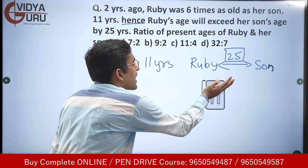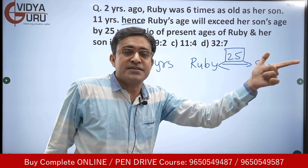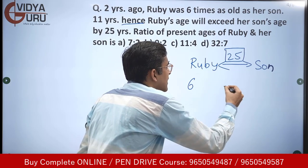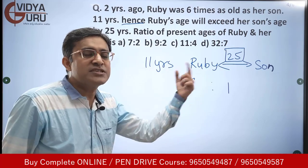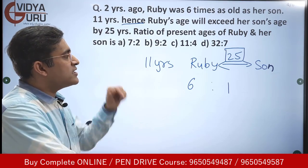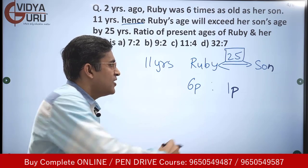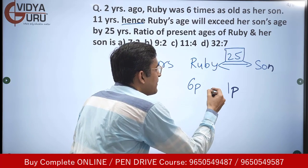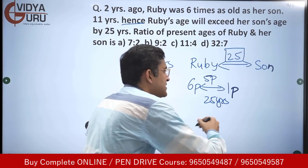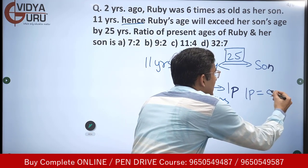So eleven years later, Ruby's age exceeds her son's by twenty-five — meaning even when Ruby was six times her son's age, the gap was twenty-five. Two years ago the ratio was 6:1, so the gap in parts was five parts. Five parts equals twenty-five years, so one part equals five years.